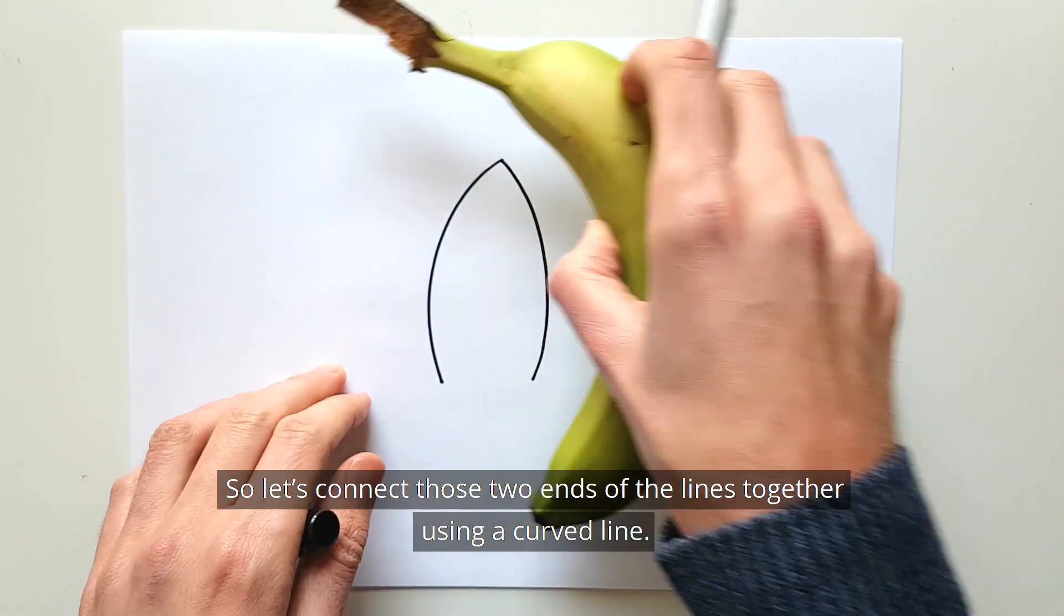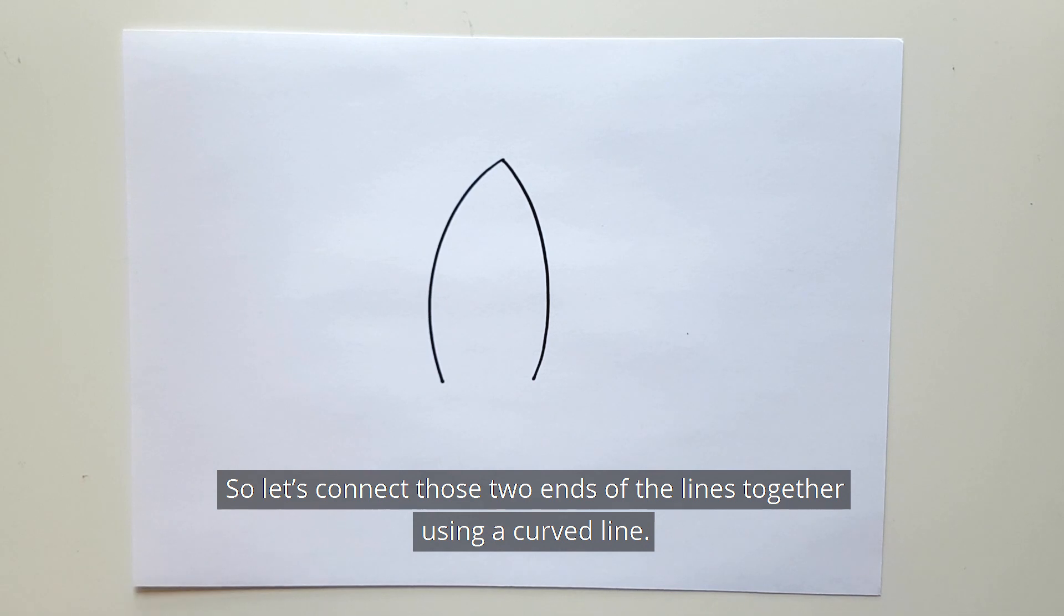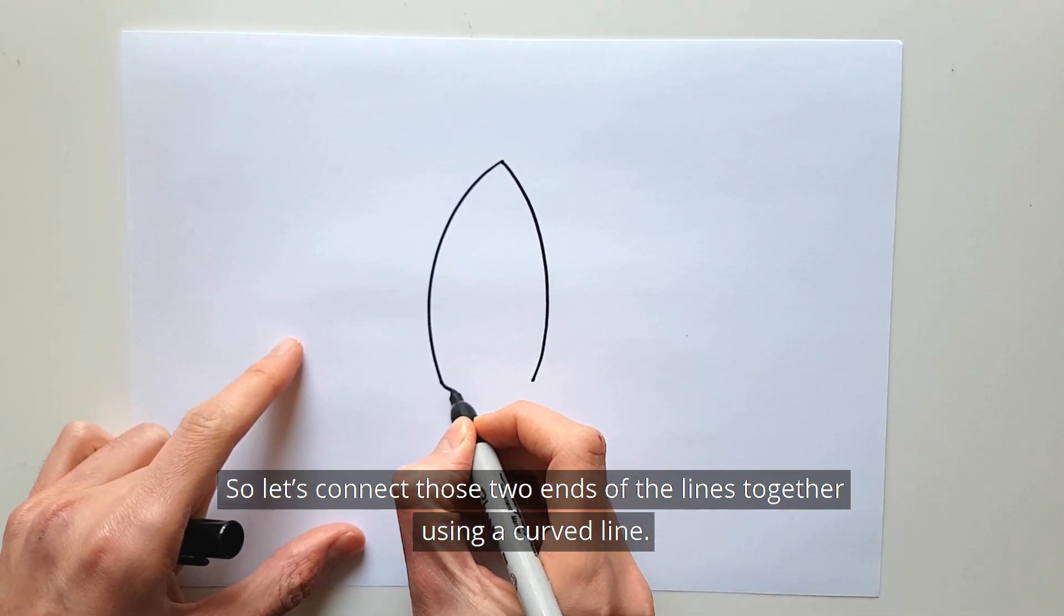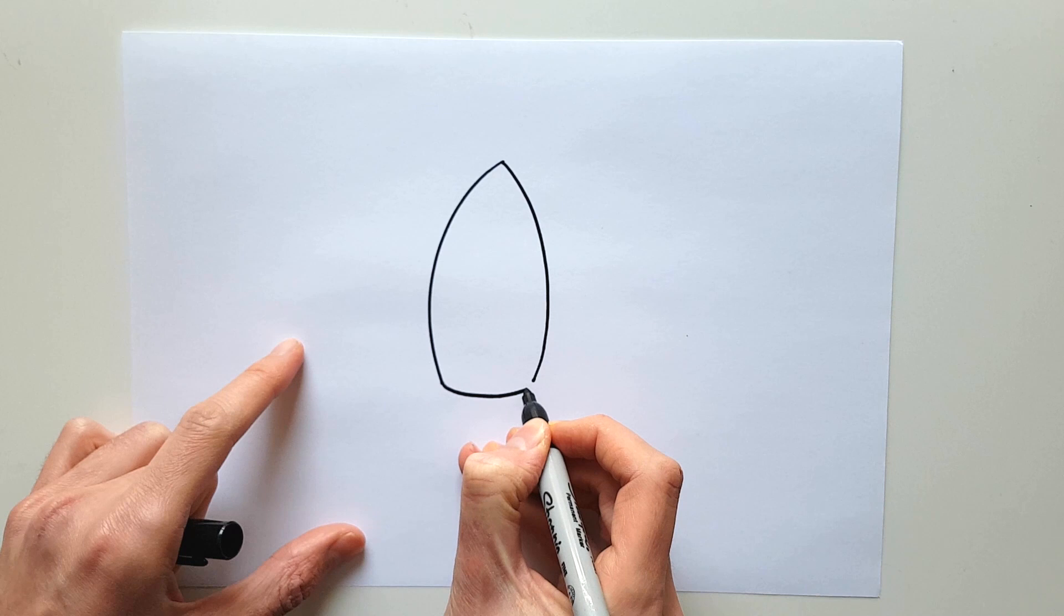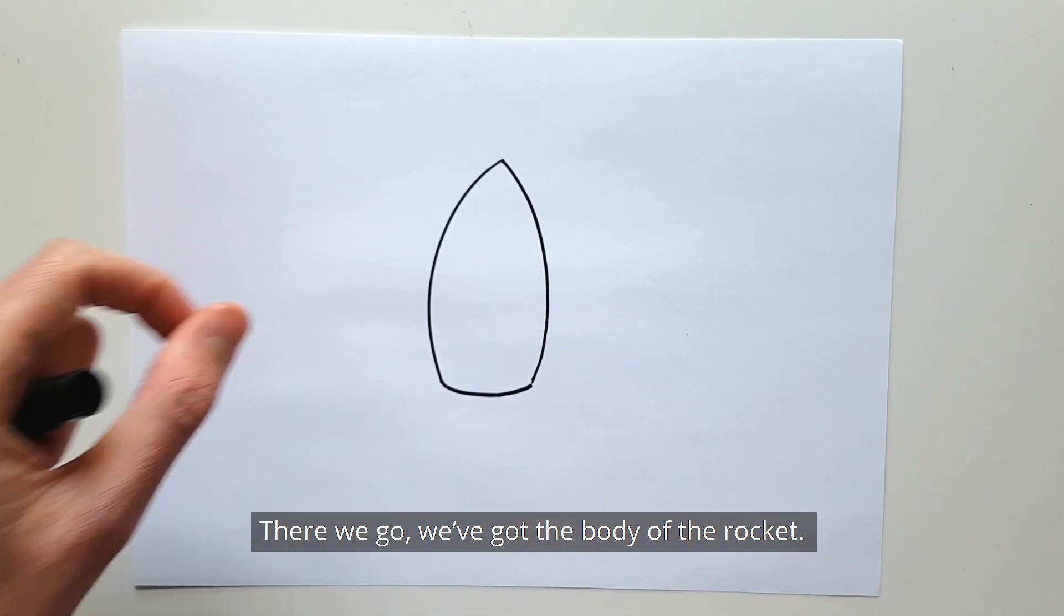So let's connect those two ends of the lines together using a curved line like this. There we go, we've got the body of the rocket.